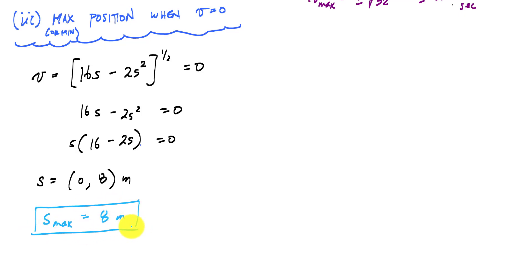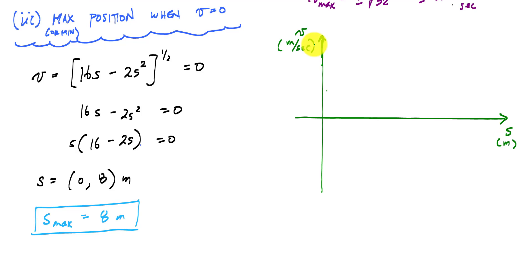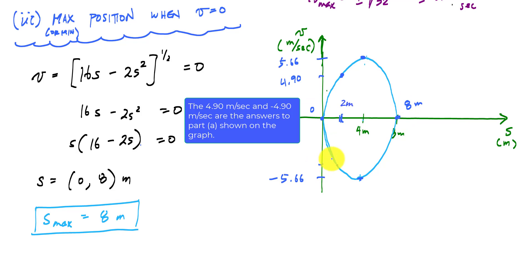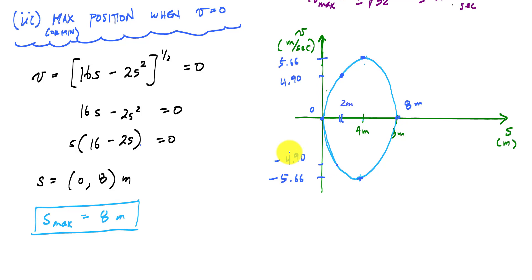What's interesting is that if we plot the velocity as a function of position, we get an ellipse. The maximum velocity of 5.66 meters per second appears at the top, negative 5.66 at the bottom, and the minimum and maximum positions are at zero and 8 meters respectively. This gives us a visual of velocity as a function of position, and graphing is always a very useful tool in dynamics to visualize the problem.